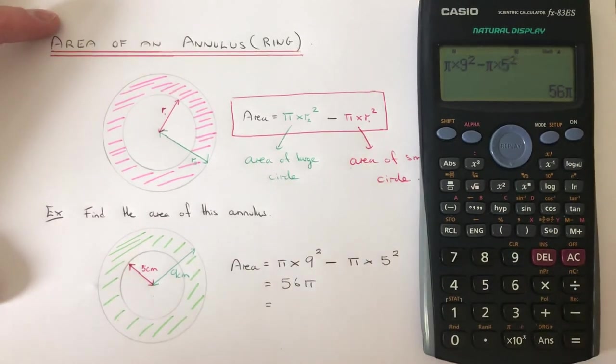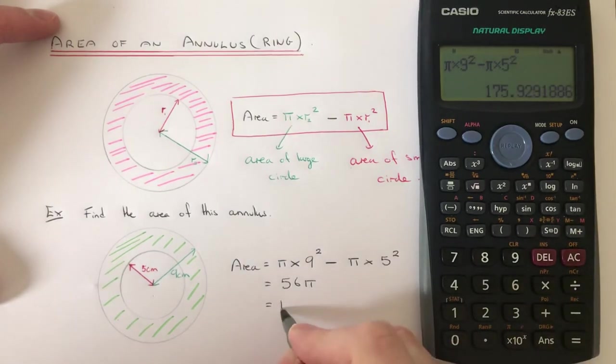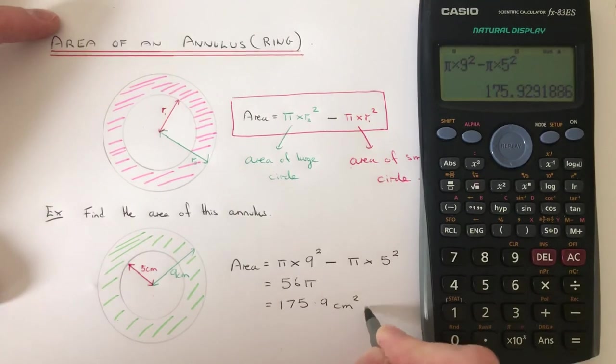So let's just give the answer as a decimal, and we get 175.9 centimetres squared.